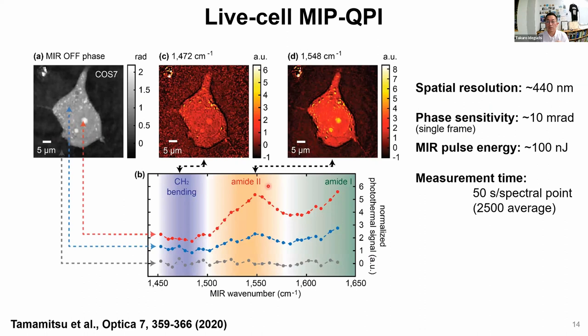The results show a conventional quantitative phase image and mid-infrared photothermal images. For example, by scanning the infrared wavenumber, we can visualize the amide II band distribution, showing the protein distribution. It works really well, but the sensitivity was not sufficient — measurement time was 50 seconds per spectral point, requiring heavy averaging. I will discuss later how to improve this signal-to-noise ratio.